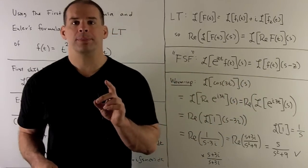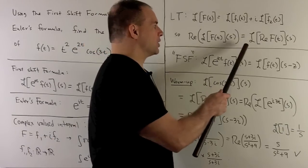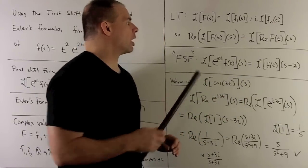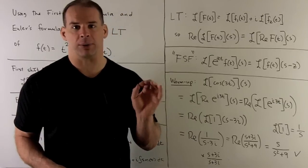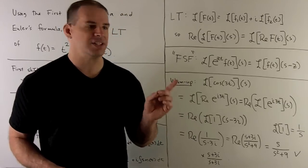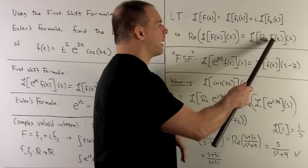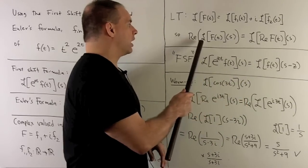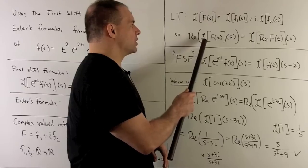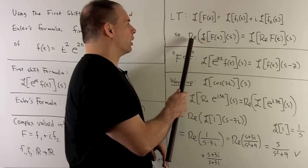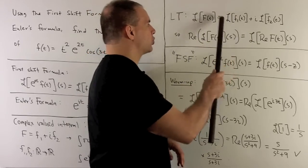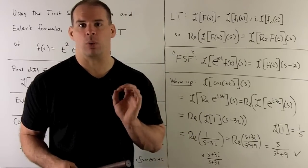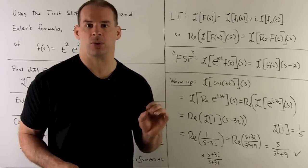With that, we have the following formula: the Laplace transform of the real part of capital F equals the real part of the Laplace transform of capital F. The real part of F is F1, so this is just the Laplace transform of F1. Over here, taking the real part of the Laplace transform of capital F also gives us the Laplace transform of F1. So this simply states Laplace transform of F1 equals Laplace transform of F1.